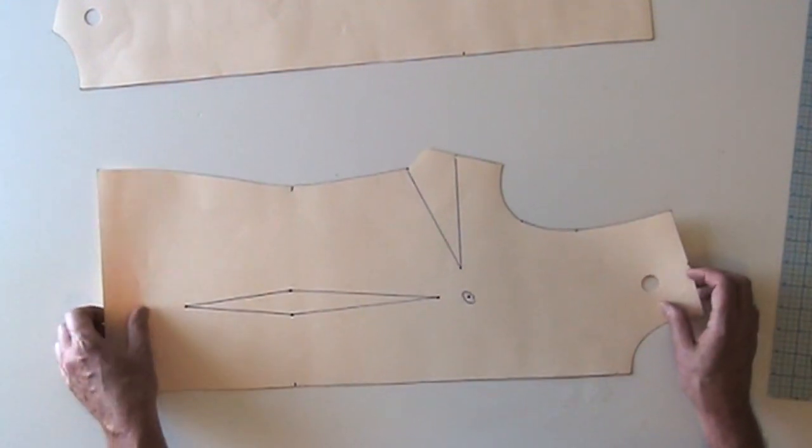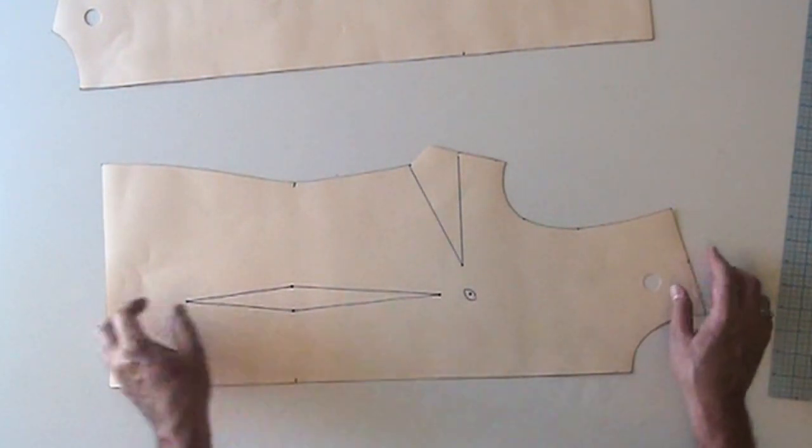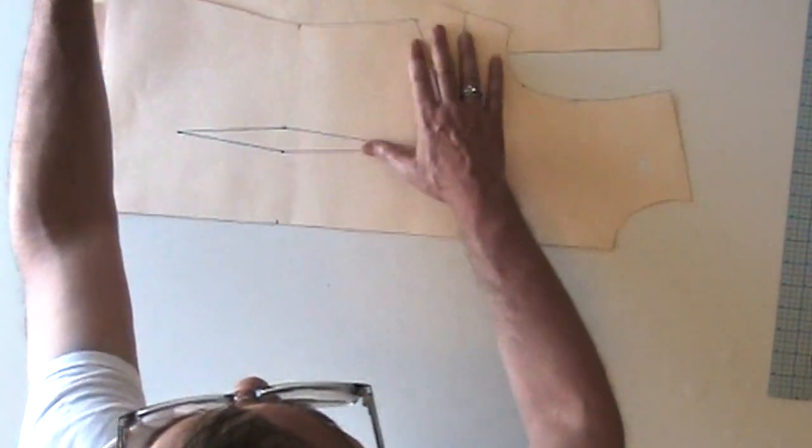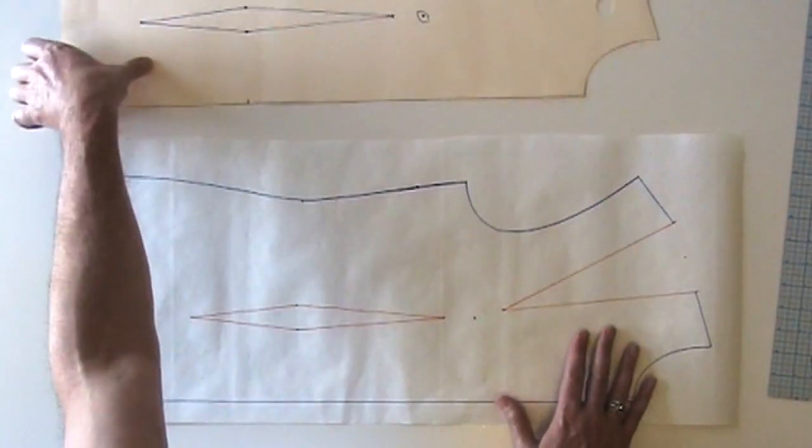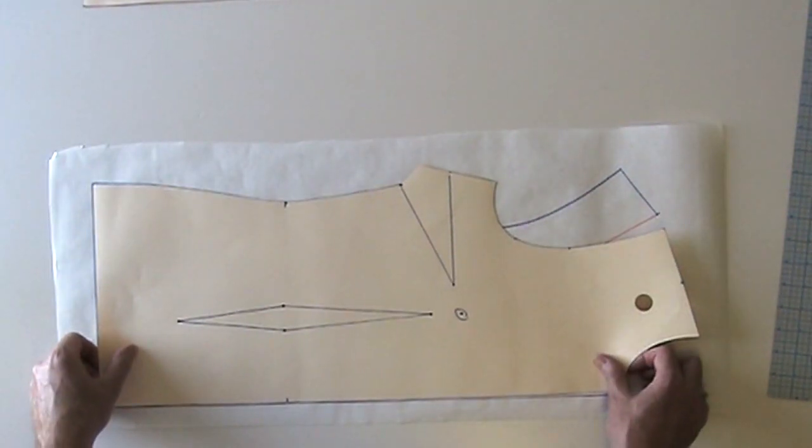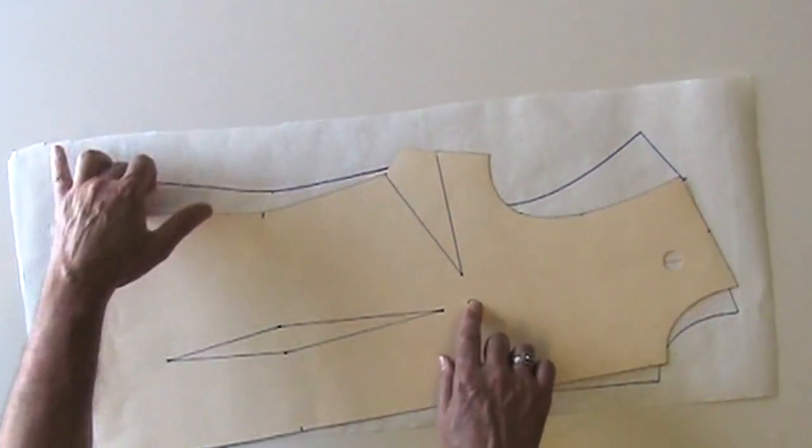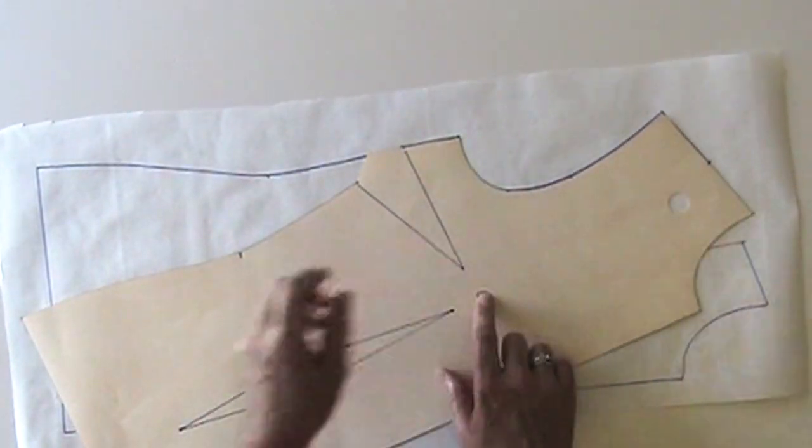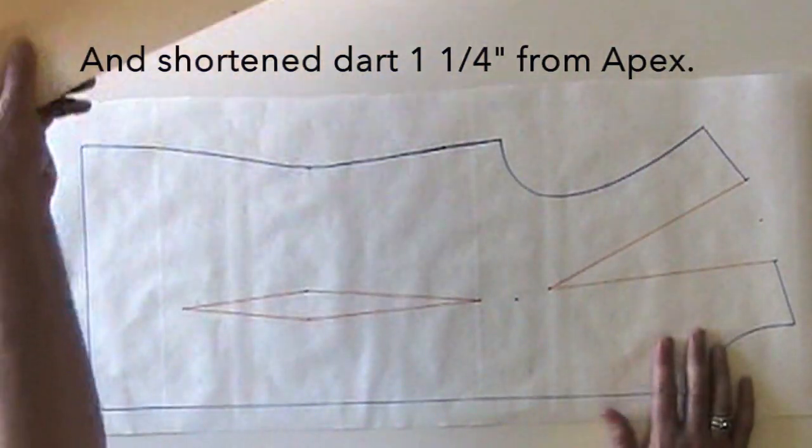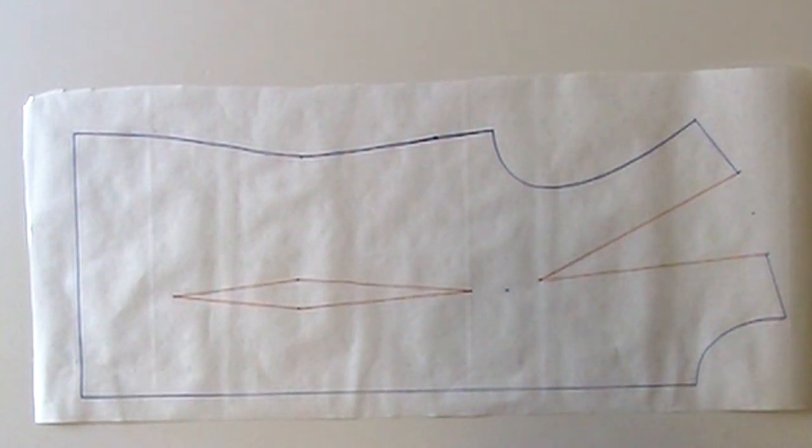I'm going to start with perhaps the easiest princess seam, and that's one that goes up into the shoulder. As you can see here, I've already taken our block and I have rotated the dart into the shoulder. And as I said before, it really is just a matter of connecting up the darts, although you do have to do it taking a few things into account.